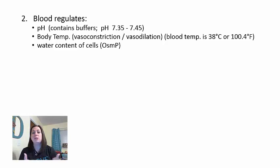Blood temperature is a little higher than normal body temperature. We often cite normal body temperature as 98.6°F, but blood temperature is about 38°C, which is approximately 100.4°F. Blood also regulates the water content of cells, creating osmotic pressure that either pushes water in or pulls water out—relating to the concept of hypotonic versus hypertonic solutions.